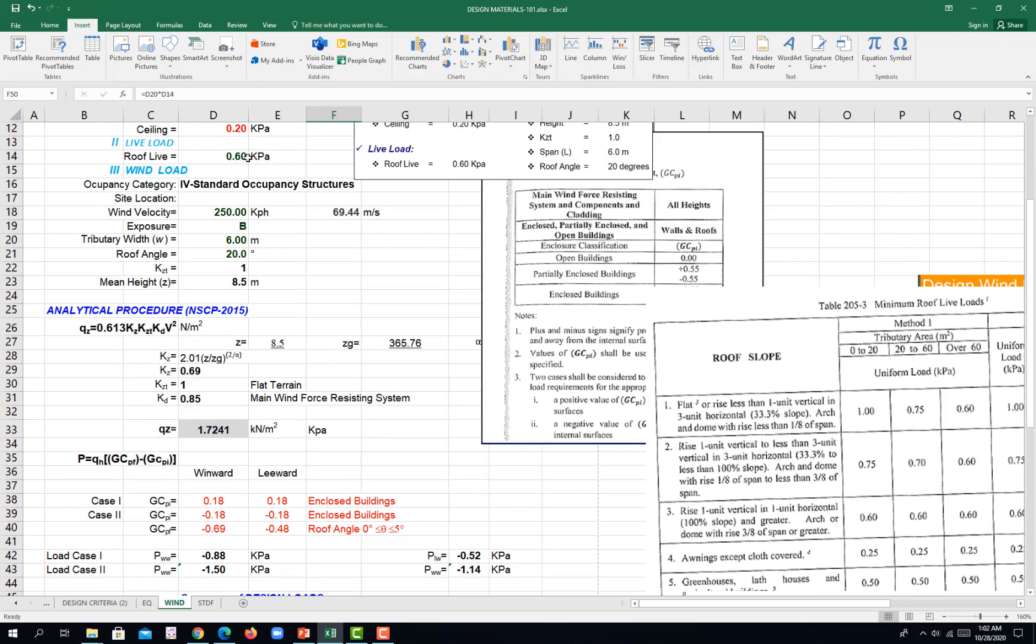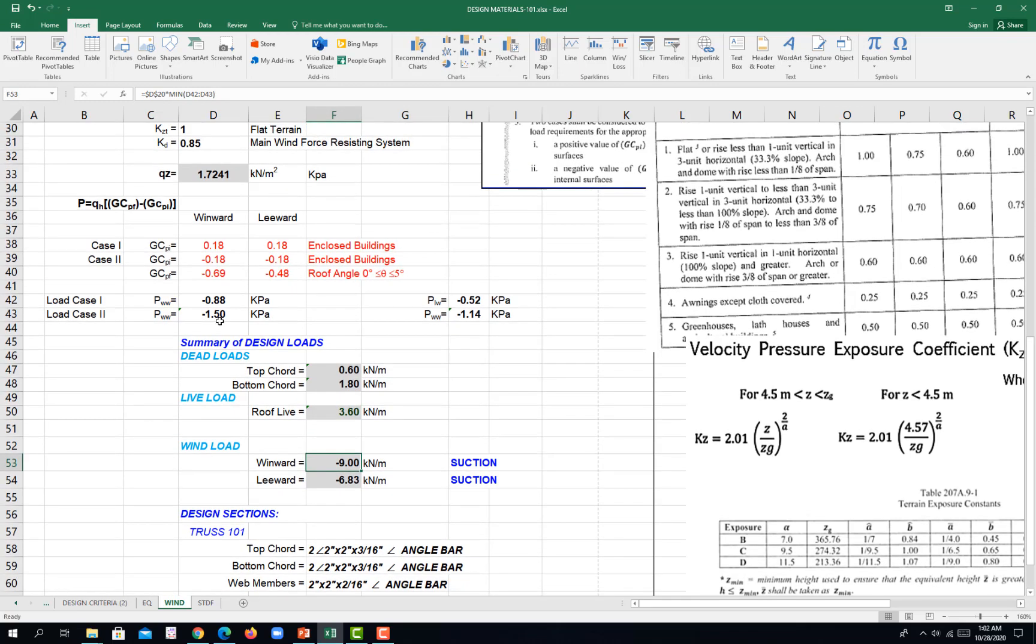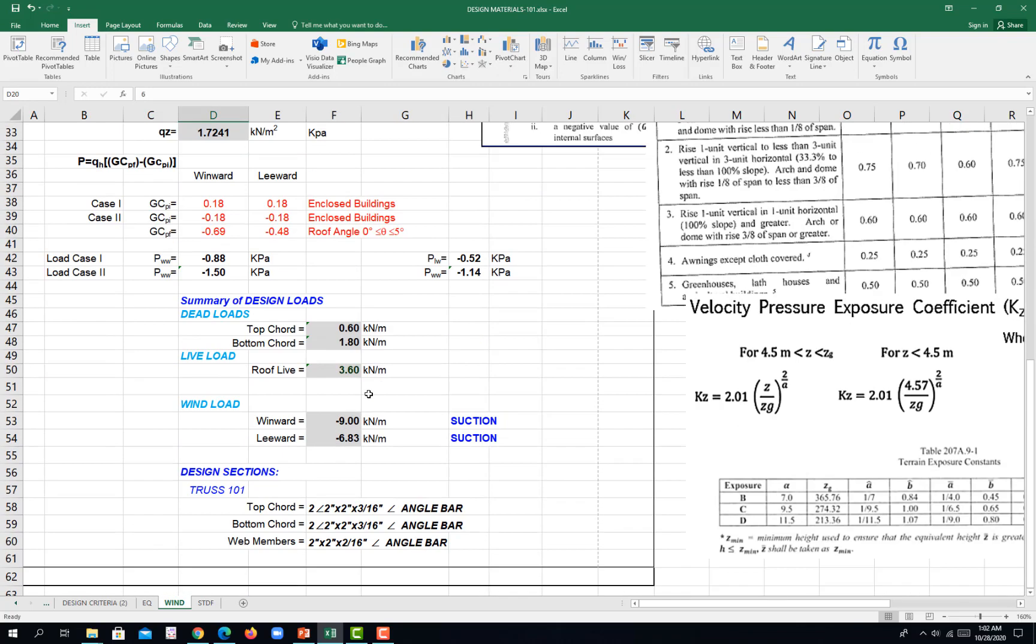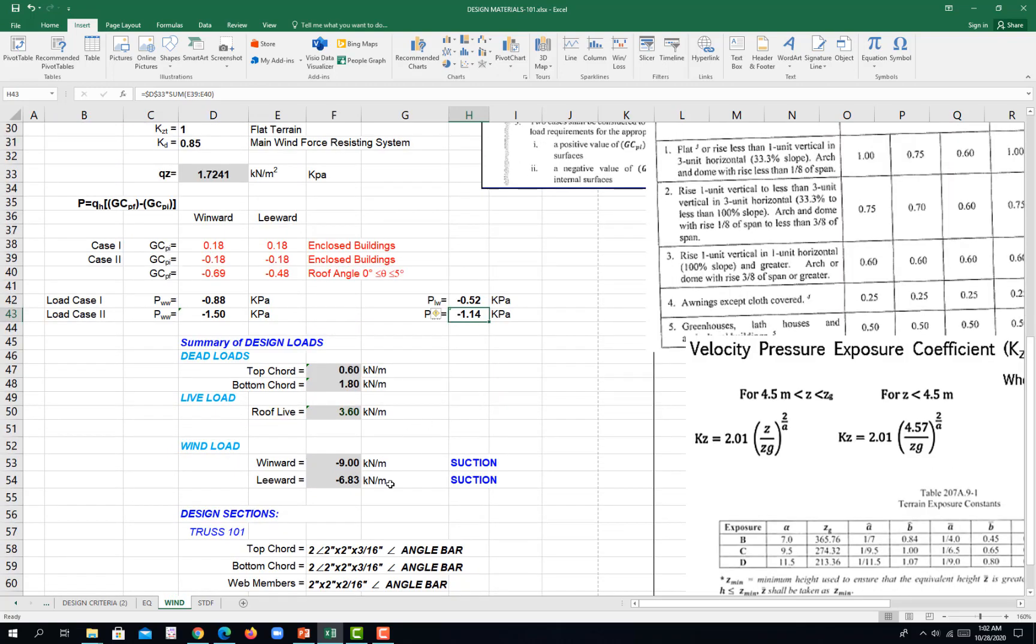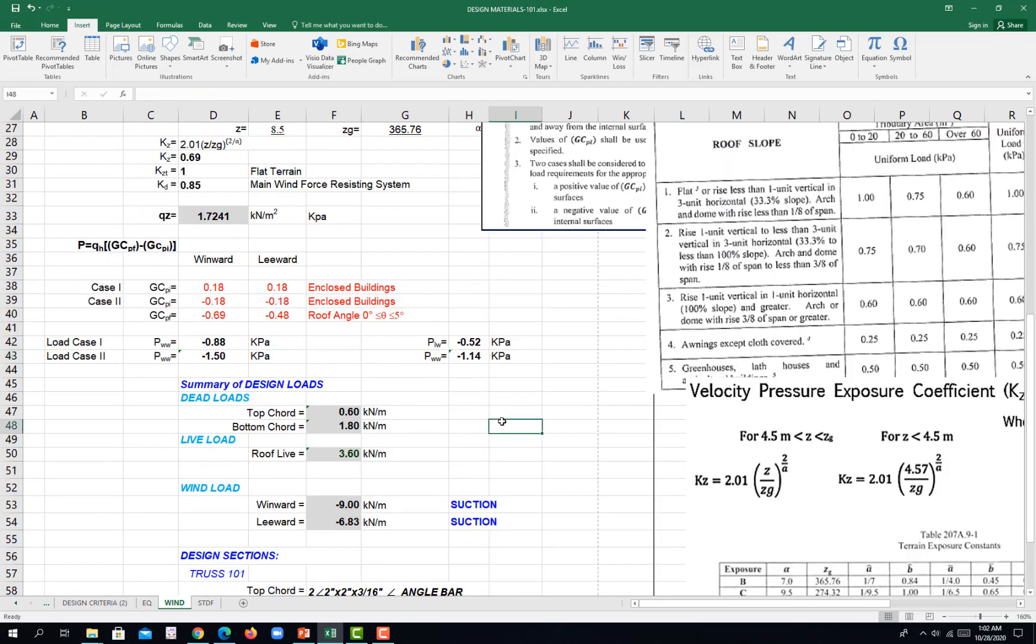And then for the roof live load, that would just be the tributary width times the roof live load, which is 0.6 in kilopascal. And then on our windward side on Surface 2, you have negative 9. That is being 1.5 multiplied by your tributary width. So under negative, it's suction. And then on the leeward side, this is negative 1.14, the maximum value here multiplied by your tributary width.